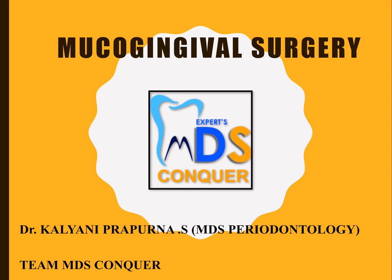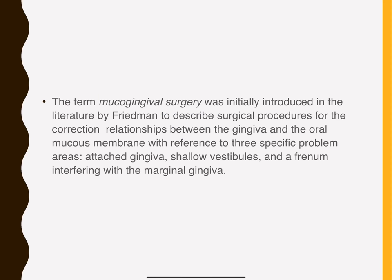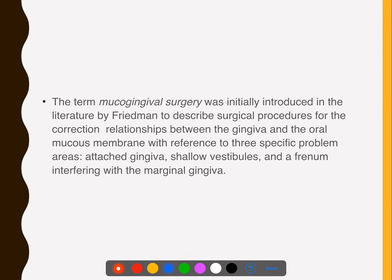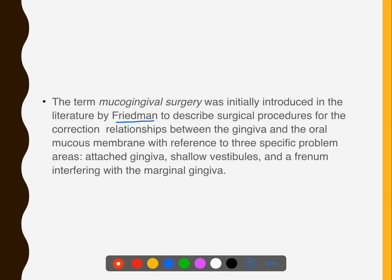Today we will talk about mucogingival surgery. Before we talk about it, let's see how the history has come. The term mucogingival was initially described by Friedman to describe surgical procedures for correction of the relationship between gingiva and mucosa, which initially included only attached gingiva corrections, shallow vestibules, and frenum interfering with marginal gingiva.